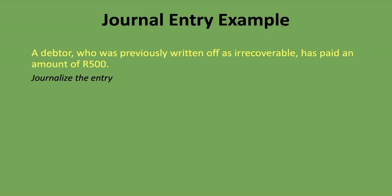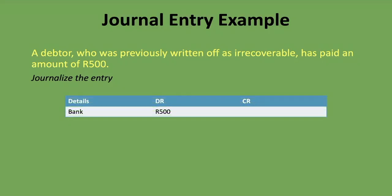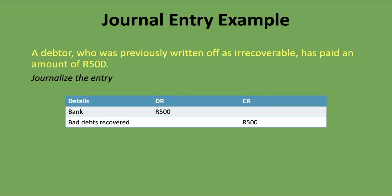When you have a bad debt recovered, someone has just paid money — so what are the two accounts? The first one is bank, because money is coming into our bank, and that is an asset account. The second one is bad debt recovered. You know that one of your accounts is bad debt recovered and obviously the other one is bank because money is coming into your bank. So we're going to debit bank and we are going to credit bad debt recovered with the 500 rand.